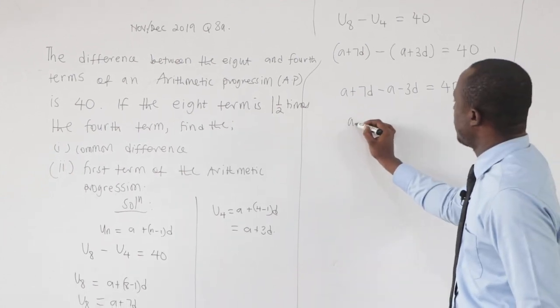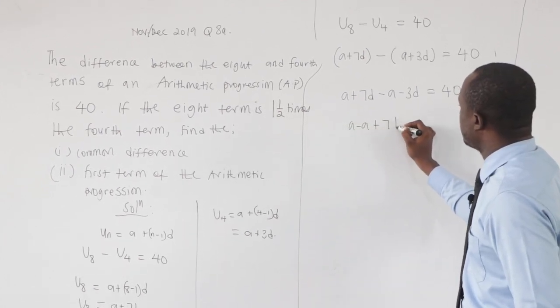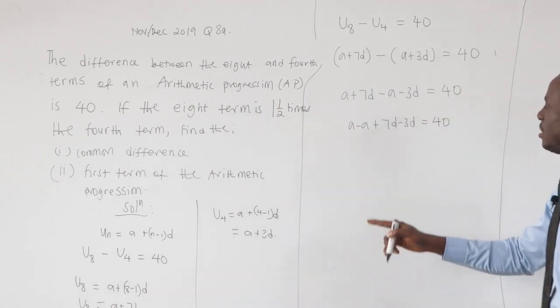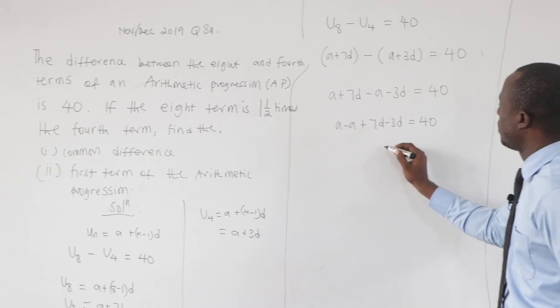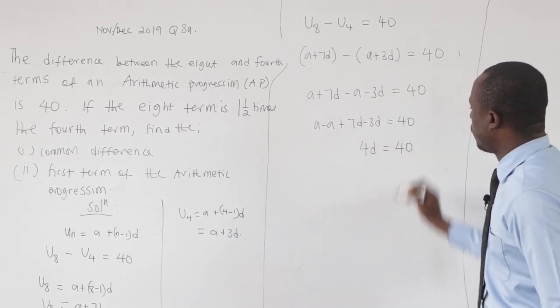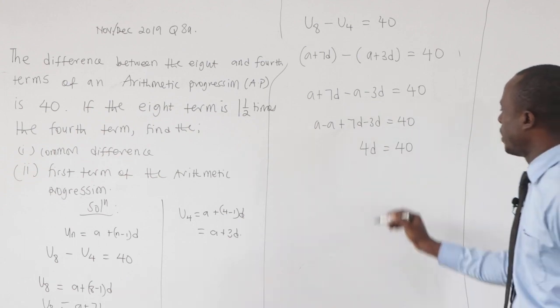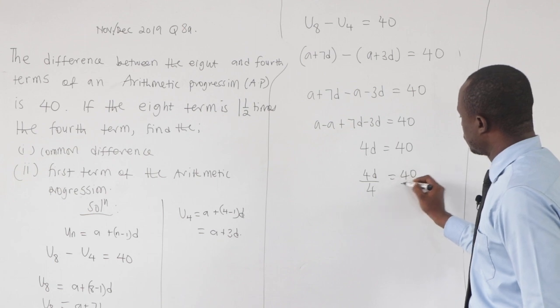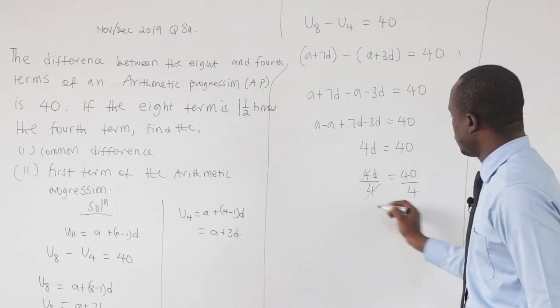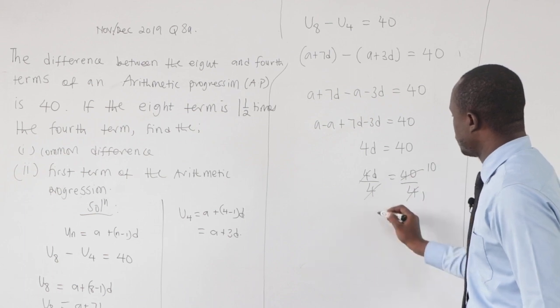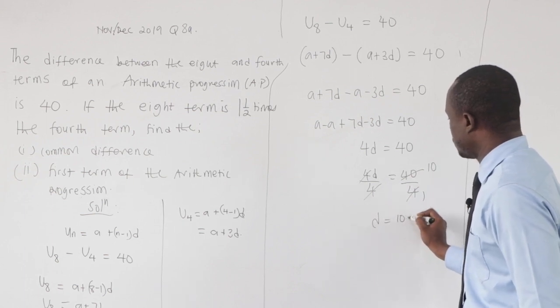We have a + 7d - (a + 3d) = 40. Clearly we have a - a + 7d - 3d = 40. a minus a is 0. 7d - 3d, that is 4d = 40. We want to find d, so we divide through by 4. This gives us d = 10.